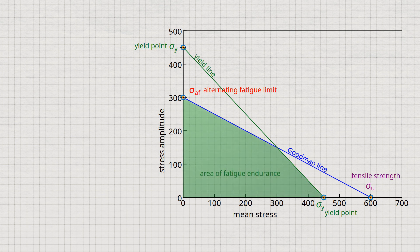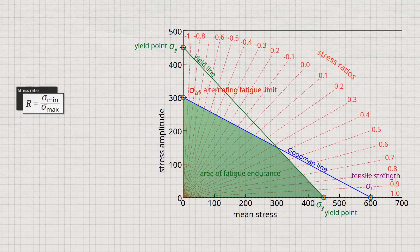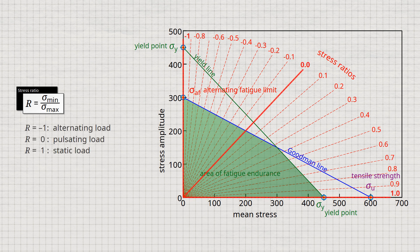For each mean stress, the maximum permissible stress amplitude for long-term operation can now be read off in the Goodman diagram. To make it easier to read the fatigue limit, selected stress ratios are often plotted in the diagram. The stress ratio is defined as the quotient of minimum and maximum stress. Important special cases are: a pure alternating load with a stress ratio of minus 1, a static load with a stress ratio of 1, and a pure pulsating load with a stress ratio of 0.